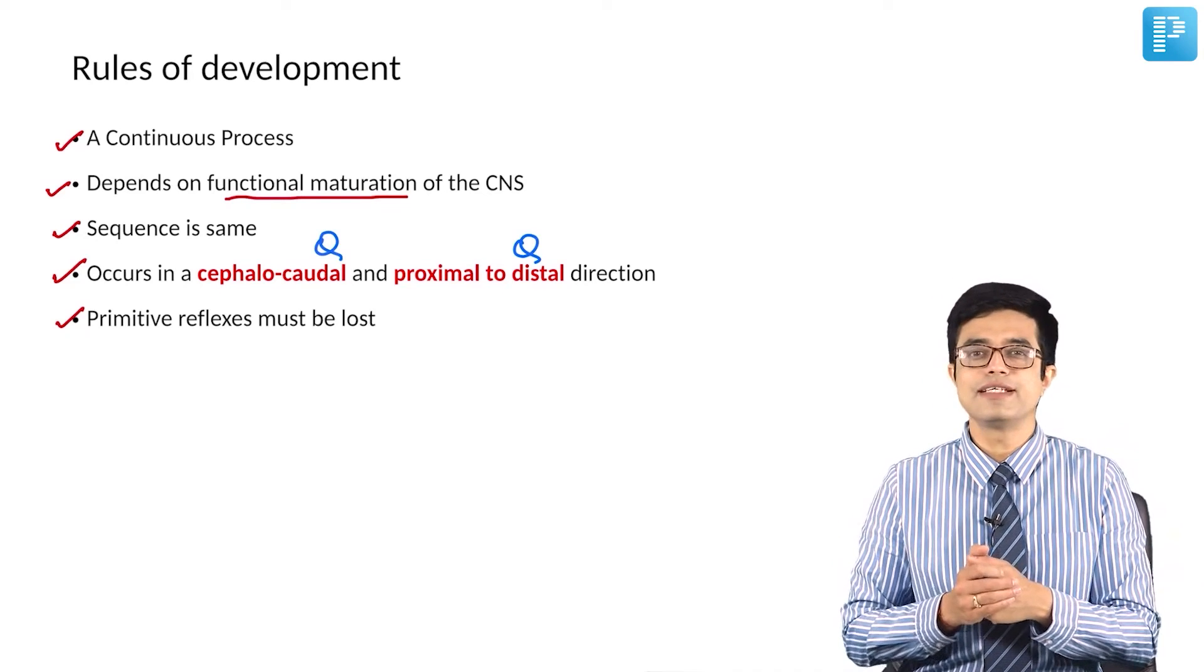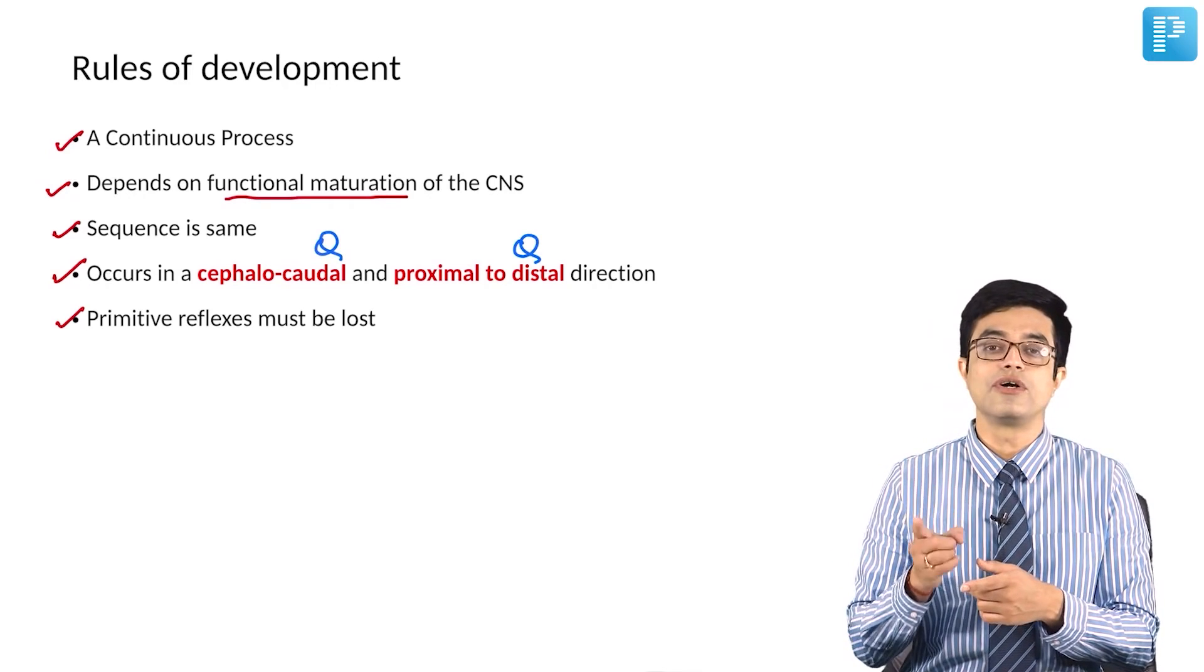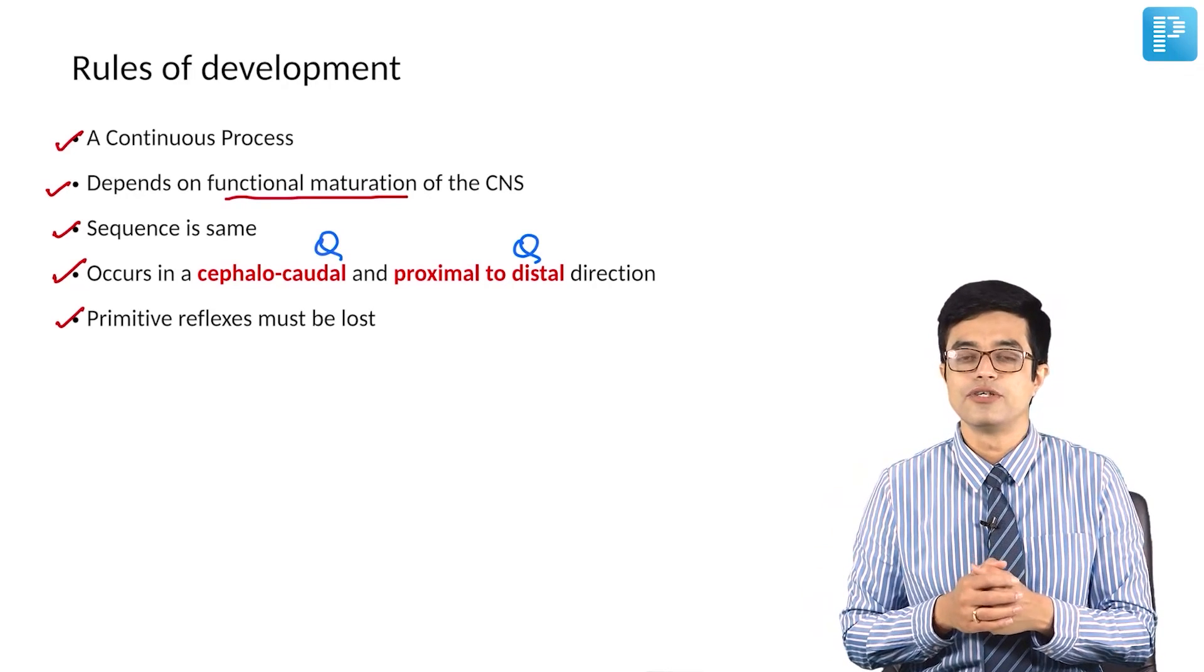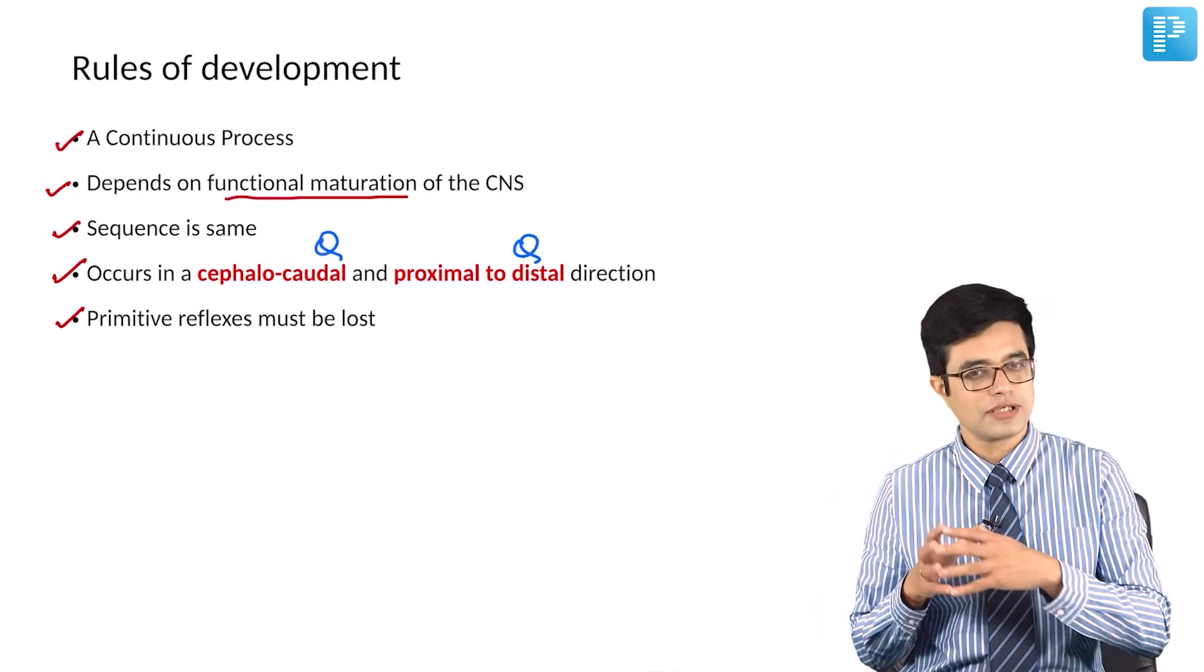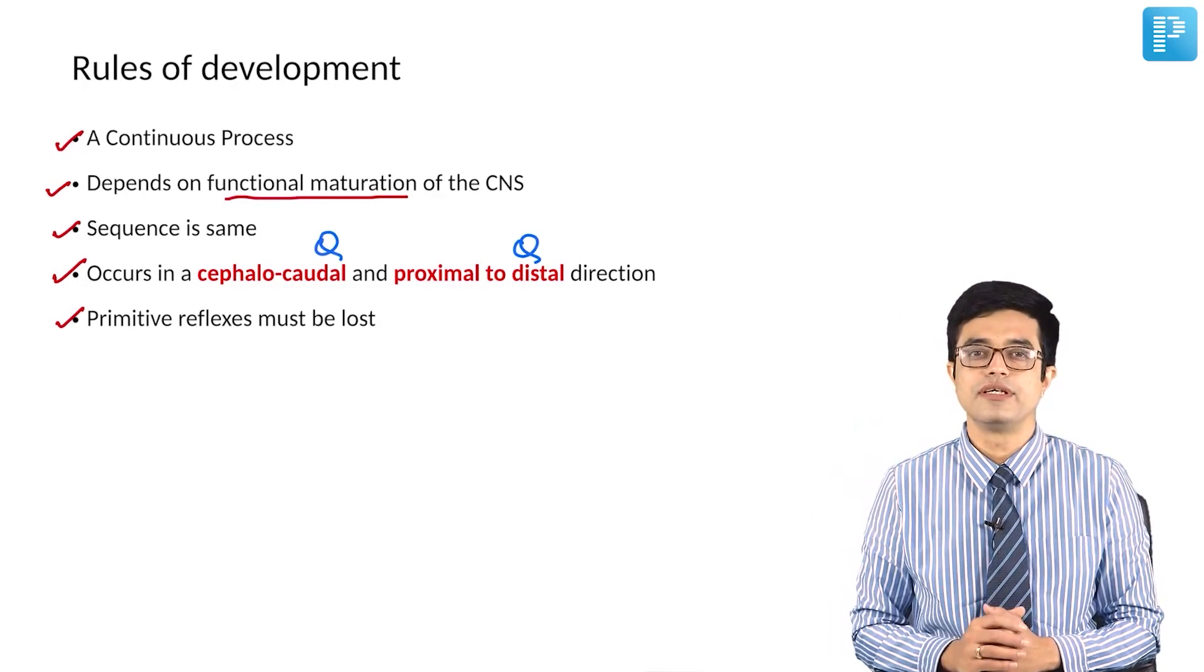Similarly, you have asymmetric tonic neck reflex. Till that reflex goes away, the child cannot start turning over in the bed. So primitive reflexes are lost, acquired reflexes, voluntary reflexes, voluntary milestones take their place.